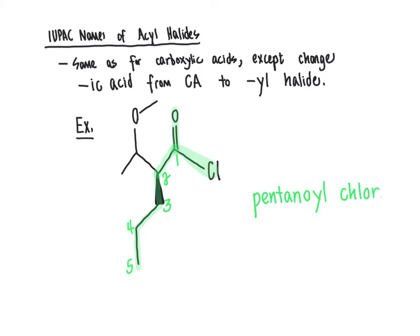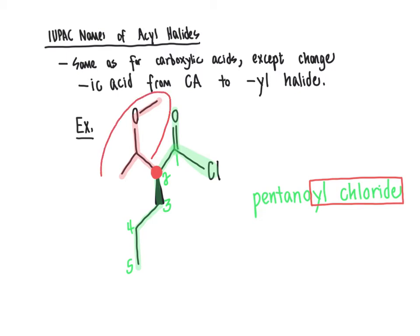We leave a space between 'pentanoyl' and 'chloride.' Keep in mind that if this were a five-carbon carboxylic acid, we would call it pentanoic acid — so we changed '-oic acid' to '-oyl chloride.' Pentanoyl chloride encompasses everything highlighted in green. Now we get to the deeper end of nomenclature because we need to name the branch at carbon number two — a branch within a branch.